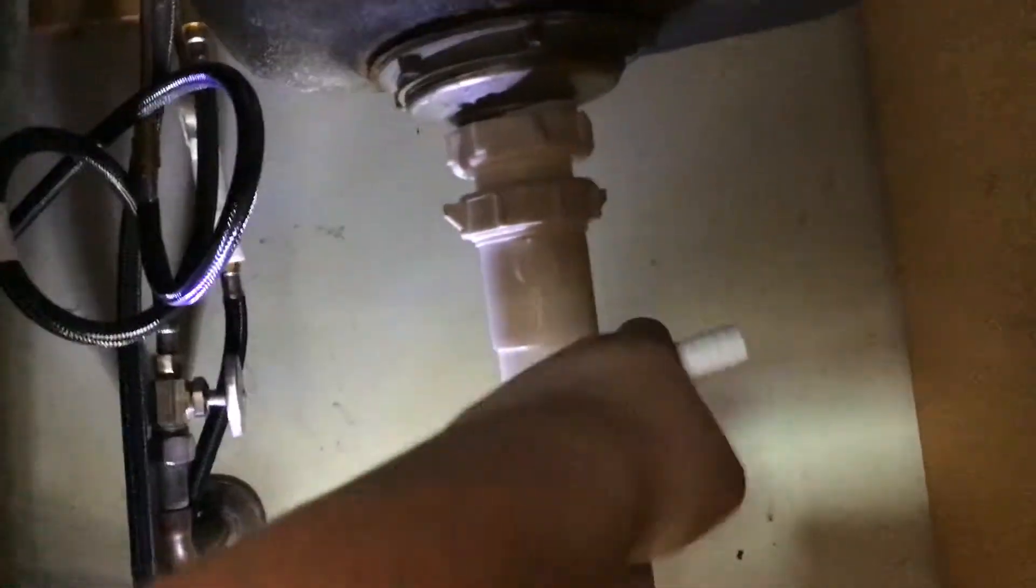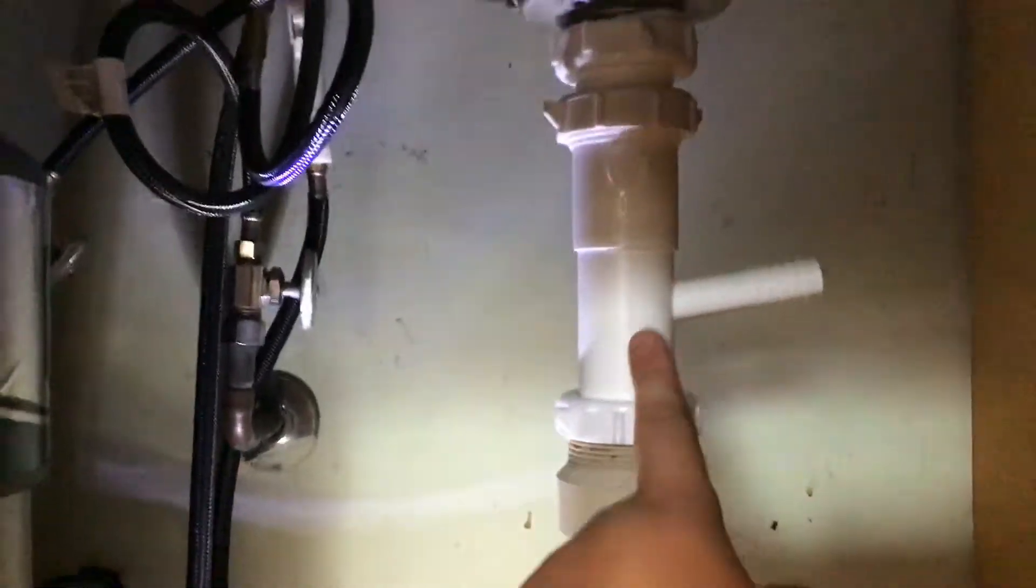You're supposed to get what we call a dishwasher Y. It has the correct tap in here. There's a diverter inside.